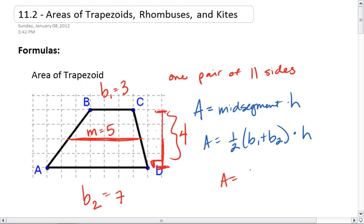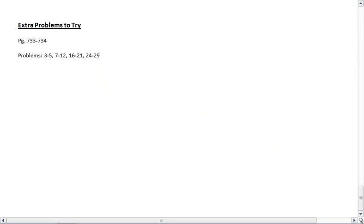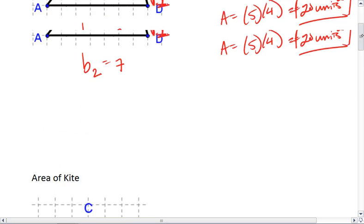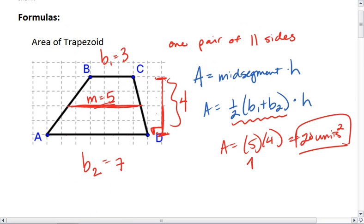The area is one-half, I'm sorry, it's just 5 times 4, which equals 20 square units. The reason I don't have to do the one-half is because I already did that when I found this value 5. This whole one-half base 1 plus base 2 is where that 5 comes from.